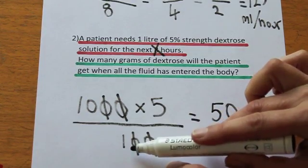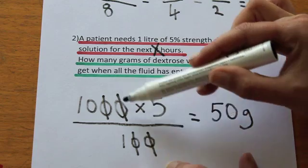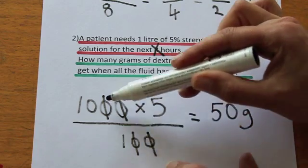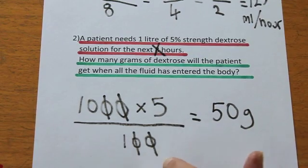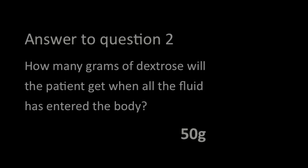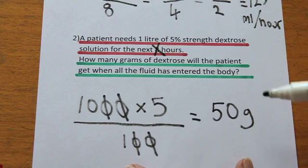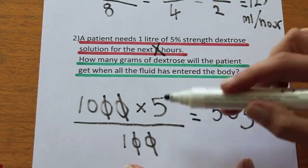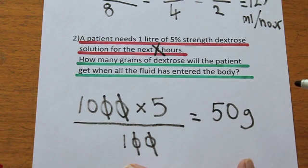The one on the bottom does nothing, and you can only do this cancelling with zeros. If you want to look at more percentage questions, go to the percentage tutorial.